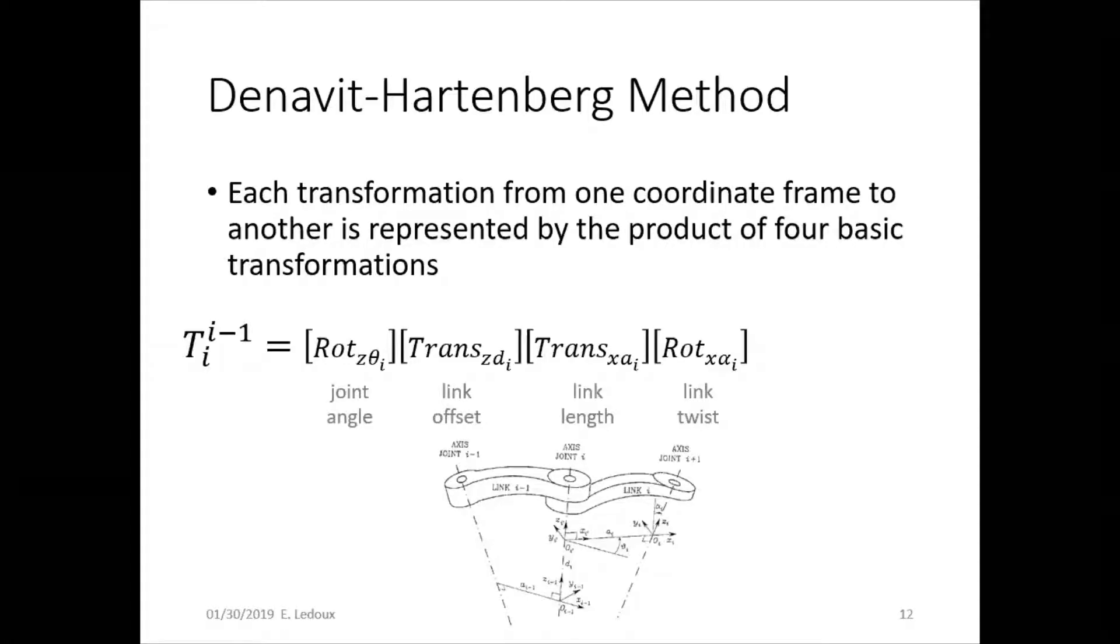One method for finding forward kinematics for complicated robots is the Denavit-Hartenberg method. It consists of four parameters: joint angle, link offset, link length, and link twist. It relates each coordinate frame to the one before it. You can multiply all of the coordinate frames together and find the transformation from the base to the tip.